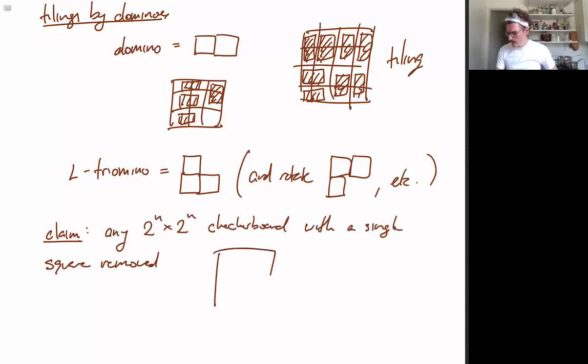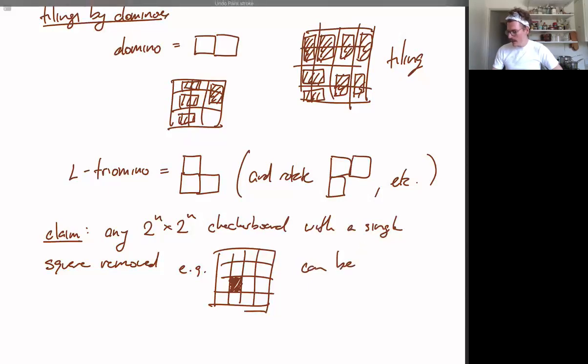So consider maybe like a 4x4 checkerboard and take one square and delete it from your checkerboard. So something like this. And the claim is that any such checkerboard can be tiled by L triominoes.